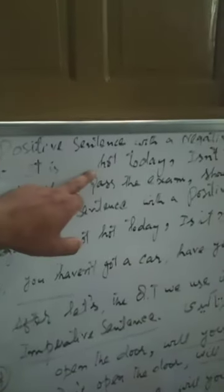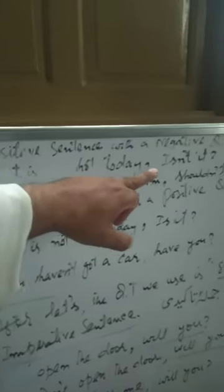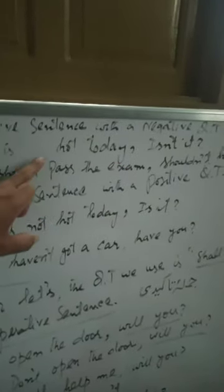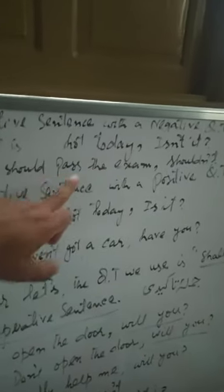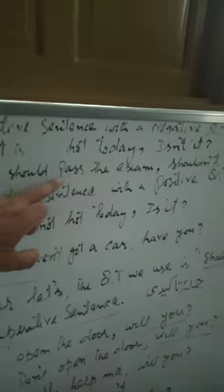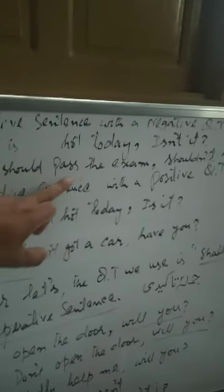First, if a sentence is a positive sentence — for example, 'It is hot today' — this is a positive sentence. Its question tag will be negative: 'isn't it?' So for a positive sentence we use a negative question tag. Another example: 'He should pass the exam' — positive sentence — question tag: 'shouldn't he?'